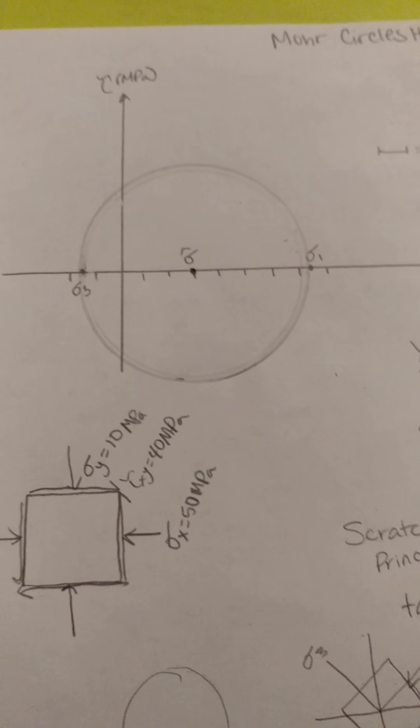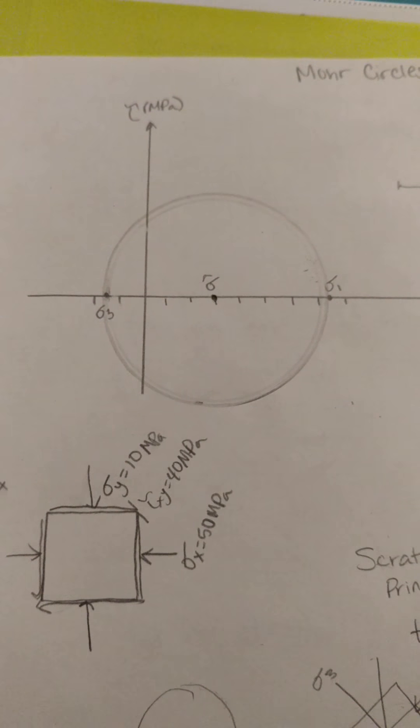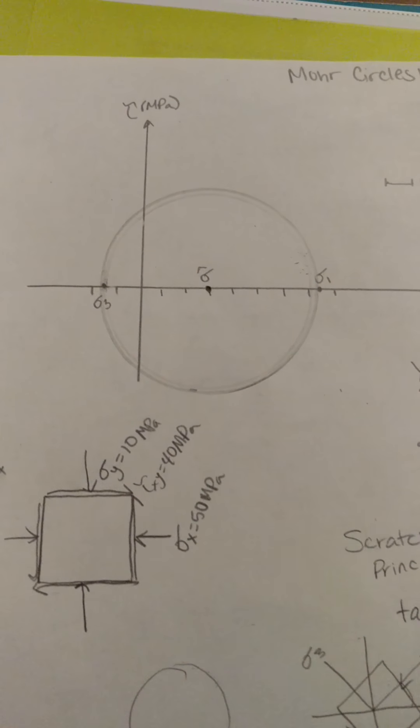And there it is. You can see I didn't do it perfectly the first time, so I erased and I redid it when it looked right. So that's my Mohr circle. I'm mostly in compression, but I got a little bit of tension.